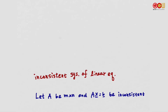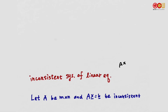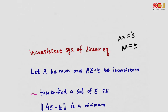In the second part of 6.4, we consider inconsistent systems of linear equations. Suppose A is n by n and this is an inconsistent system. Inconsistent systems have no solutions, but for inconsistent systems, although we cannot find x so that Ax equals b, we would like to find x so that it is as close to b as possible. In other words, we want to minimize the distance between Ax and b.